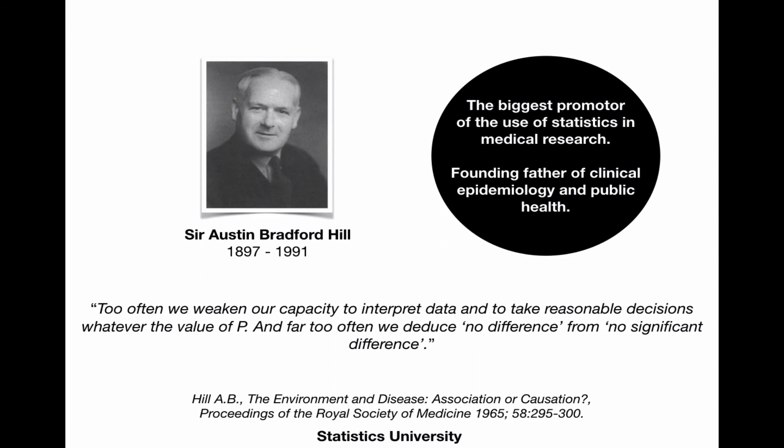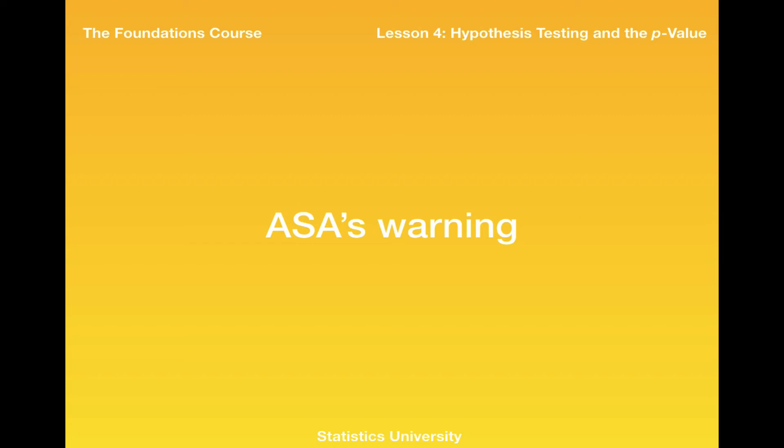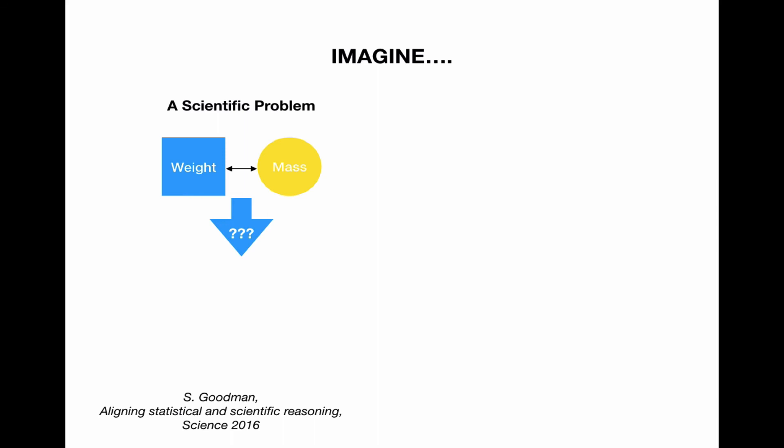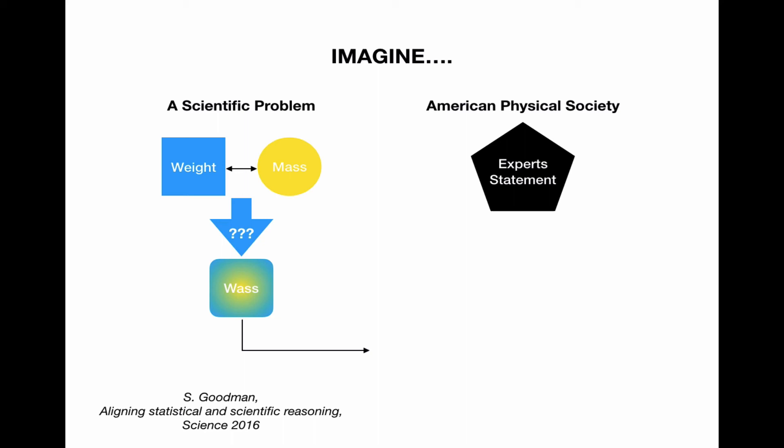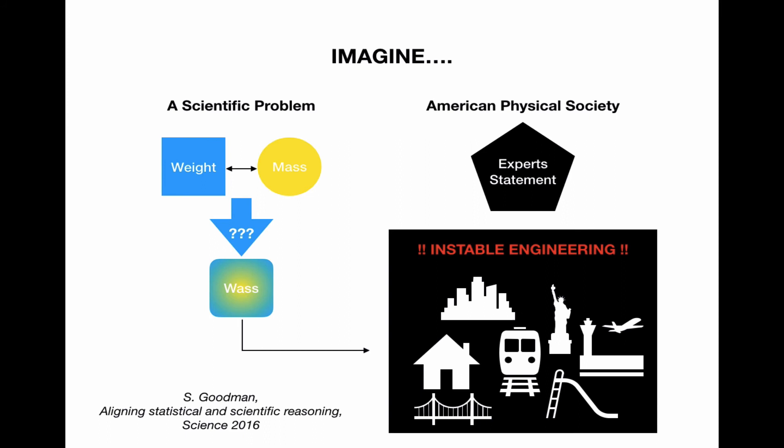The American Statistical Association in 2016 published a set of papers where they warned about the misuse of significance testing and the p-value. Imagine that in the world of construction building people started to confuse weight and mass and started to talking about gas and that the American Physical Society issued an expert statement where they warn about unstable engineering. That's basically what happened with ASA's warning on p-values.